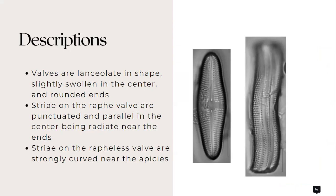Striae on the raphe valve are punctuated and parallel in the center, being radiate near the ends, while striae on the rapheless valve are strongly curved near the apices.